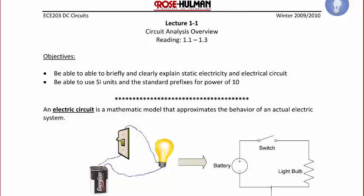Lecture 1-1 is a circuit analysis overview, and you should be reading sections 1.1 through 1.3 in your textbook in order to learn more about this topic. The objectives of today's lecture are to be able to briefly and clearly explain static electricity and electric circuits, and to be able to use SI units and standard prefixes for powers of 10. These will be the main topics covered on your first quiz, which is a Physics Foundation review quiz of things that you should have learned in a prerequisite course for this one.